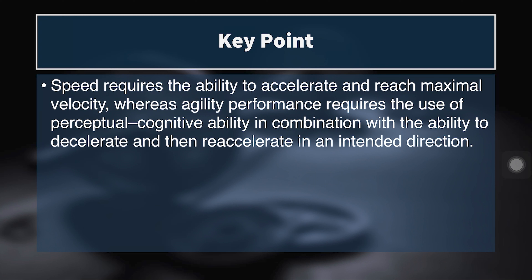Speed requires the ability to accelerate and reach maximal velocity, but this refers only to straight-line maximal velocity — not decelerating, change of direction, or any stimulus response. Agility performance requires perceptual-cognitive ability combined with the ability to decelerate and re-accelerate in an intended direction. So it's not just about force applied linearly into the ground or reorienting the center of mass, but there is also that perceptual-cognitive component in agility.